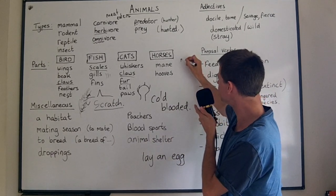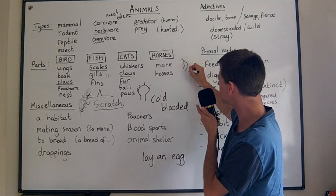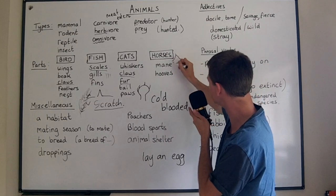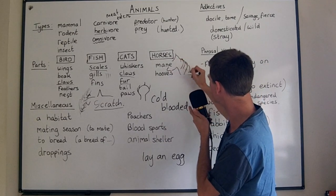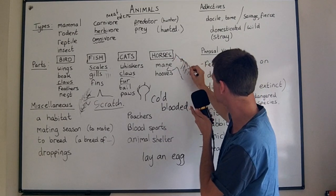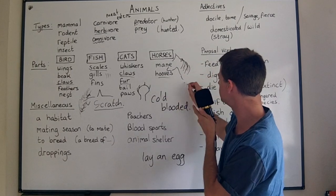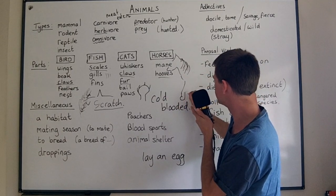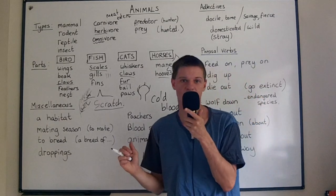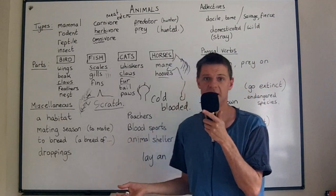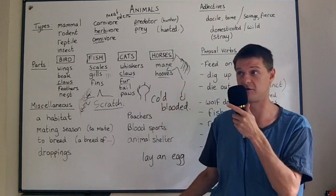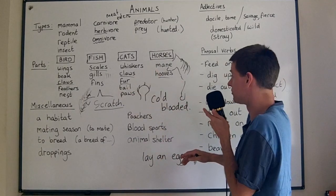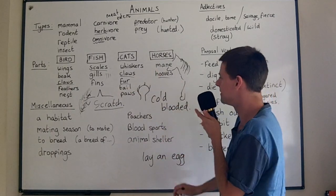Horses have a mane — and so do lions, by the way. The mane is the hair which comes down the back of the horse's neck. Horses also have hooves on their feet — a horse's foot is called a hoof. We put horseshoes on those hooves, especially if you go horse riding.